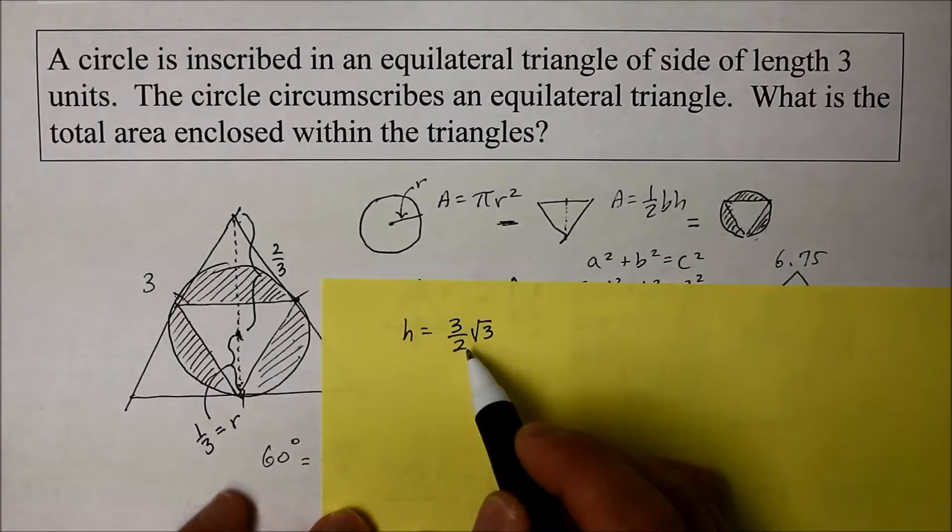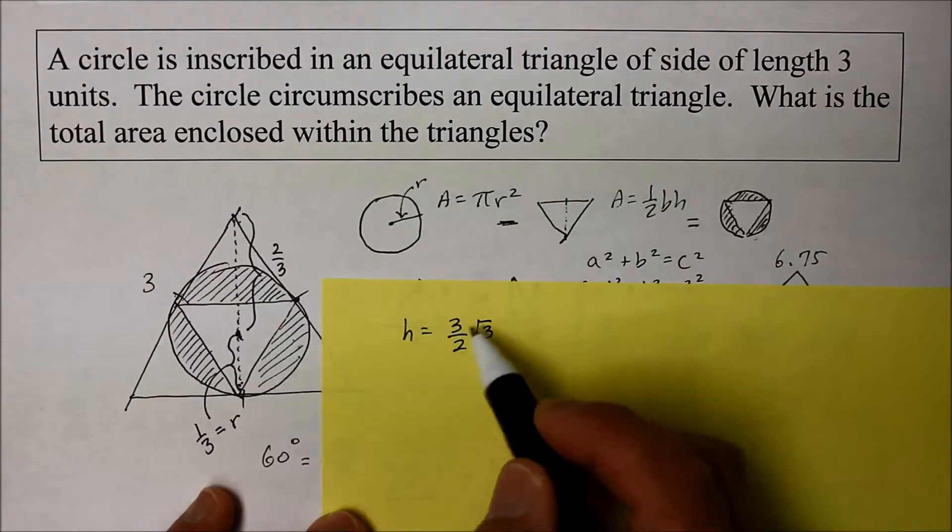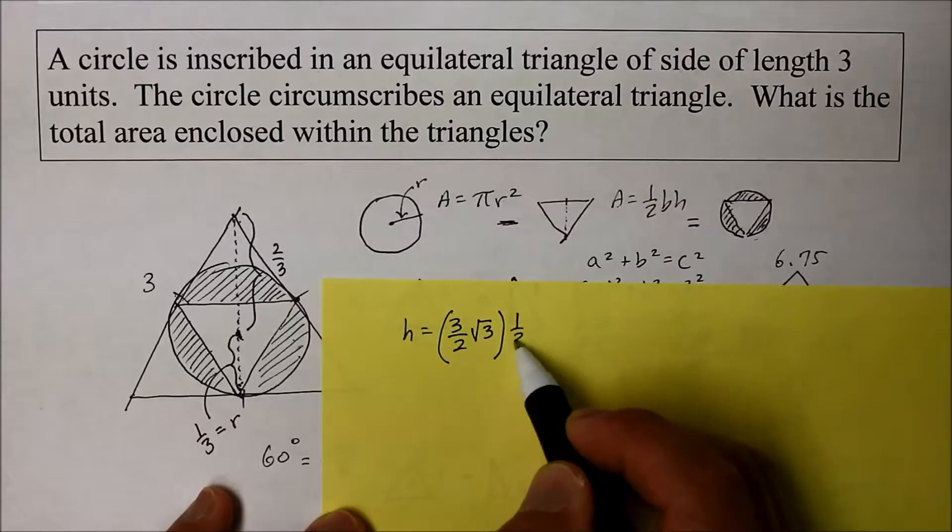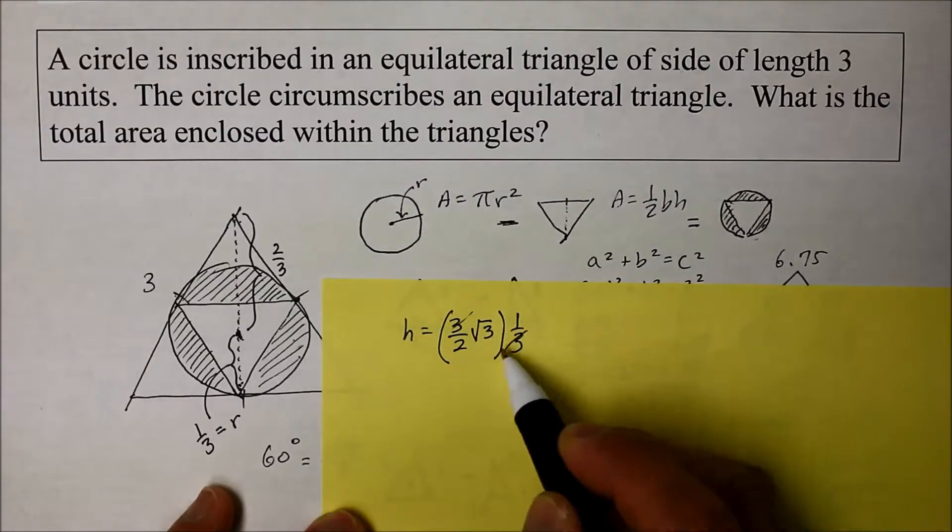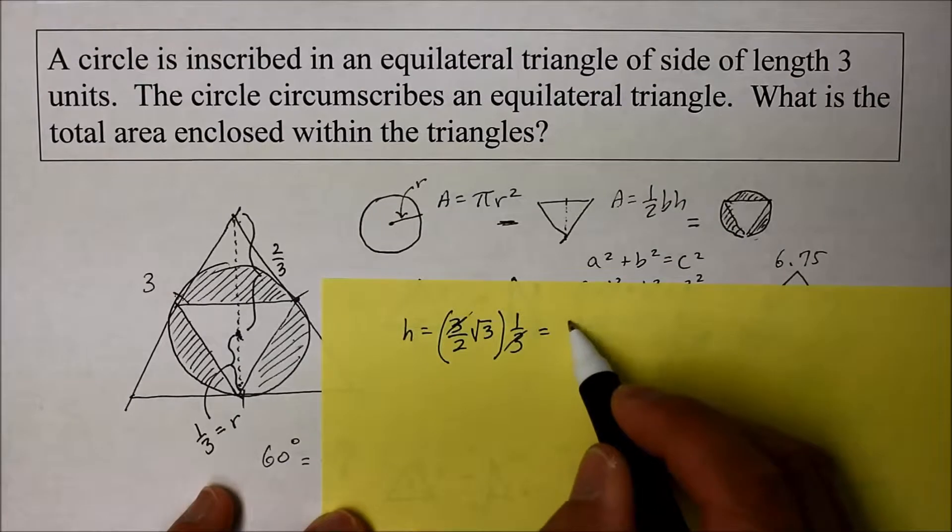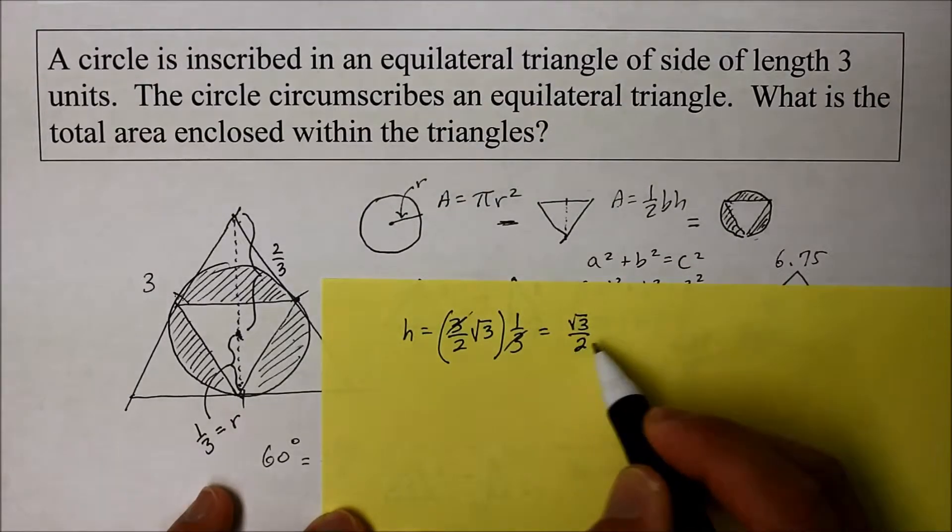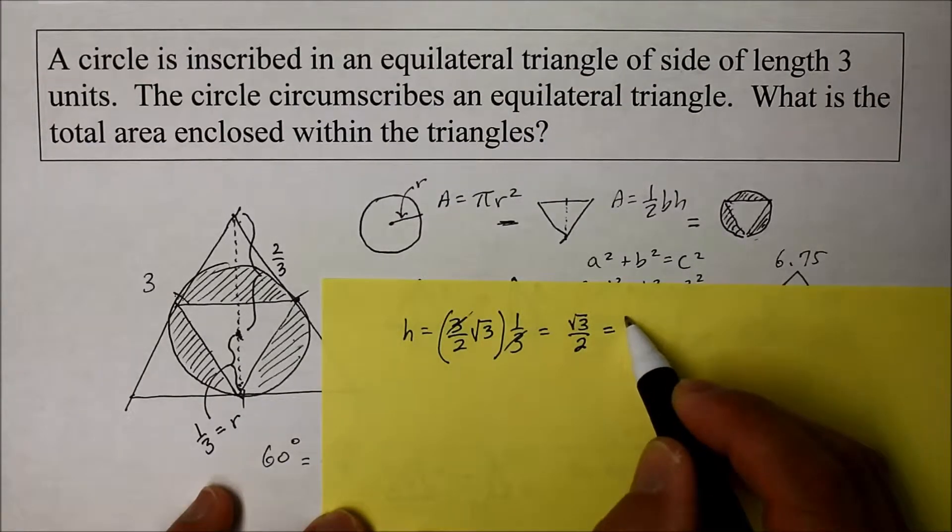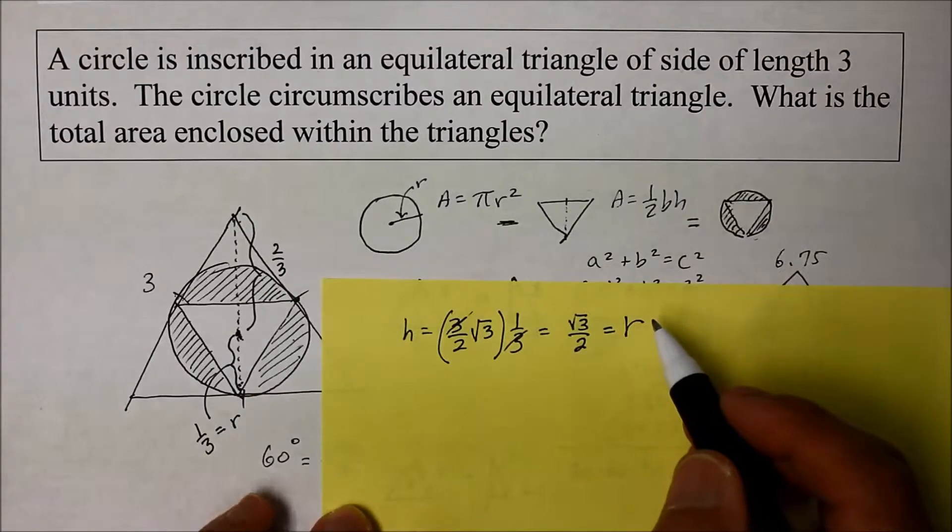Now we just need one-third of it, which will become the radius. So I'm going to multiply one-third. Simplify the numbers. So I get square root of 3 over 2. And that now is the radius. Yeah!